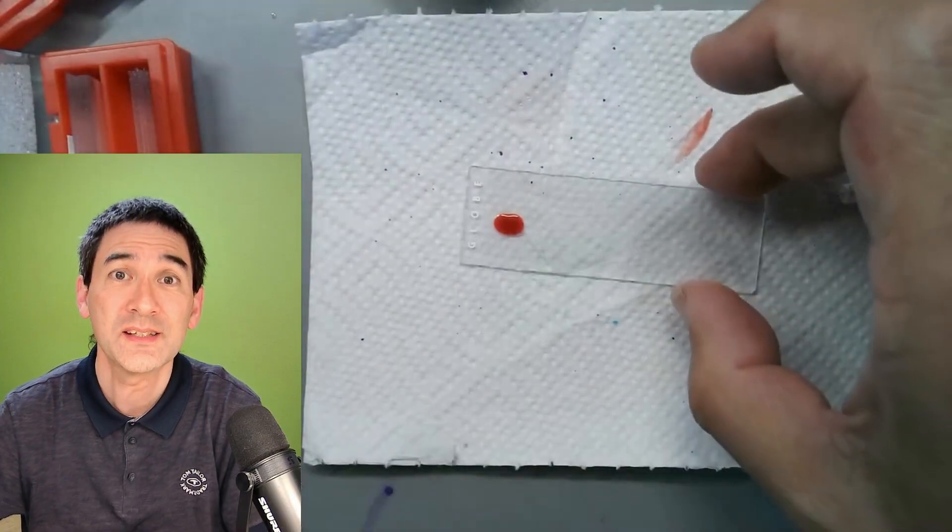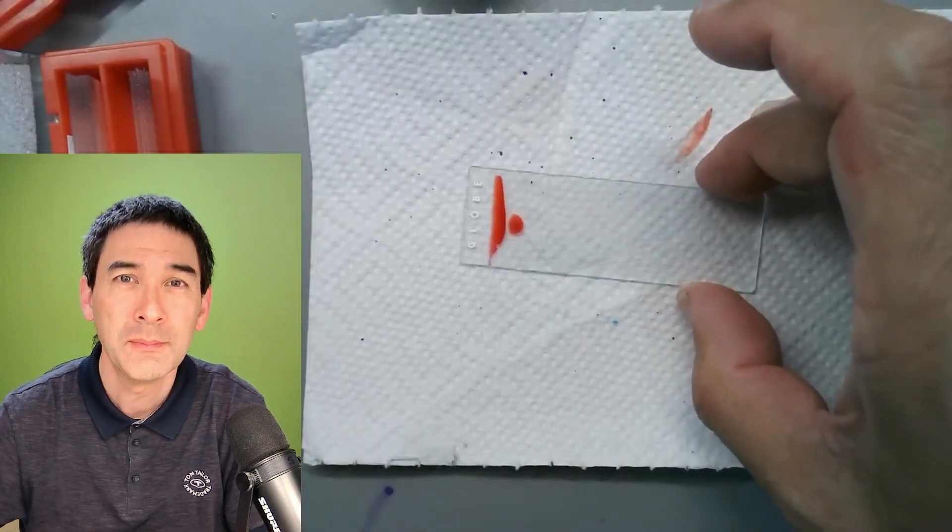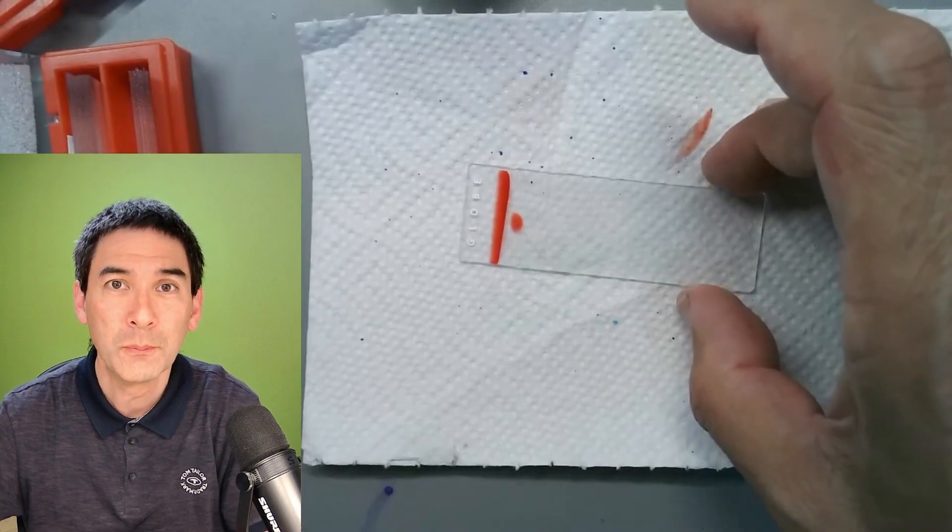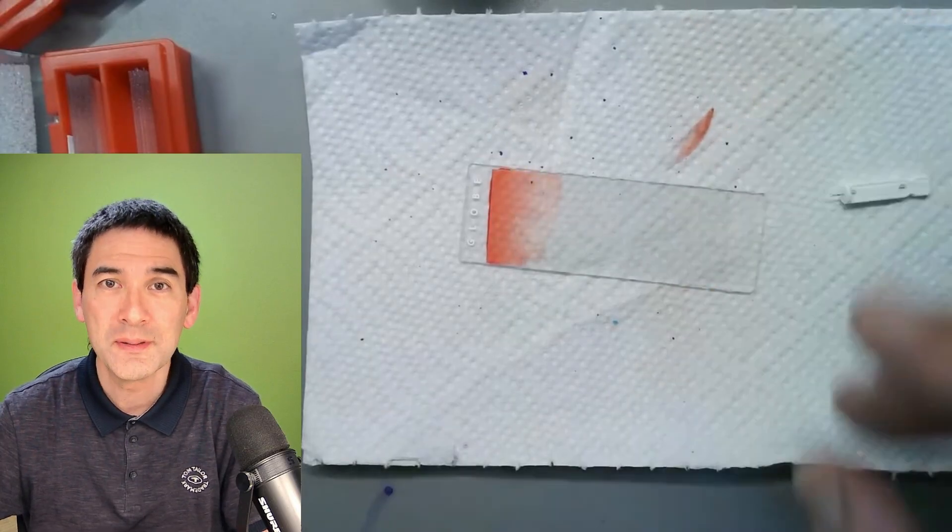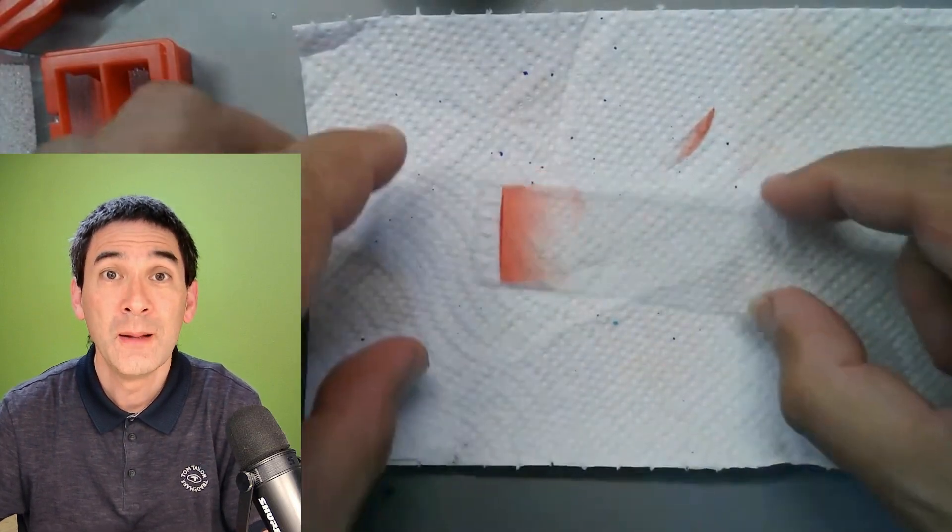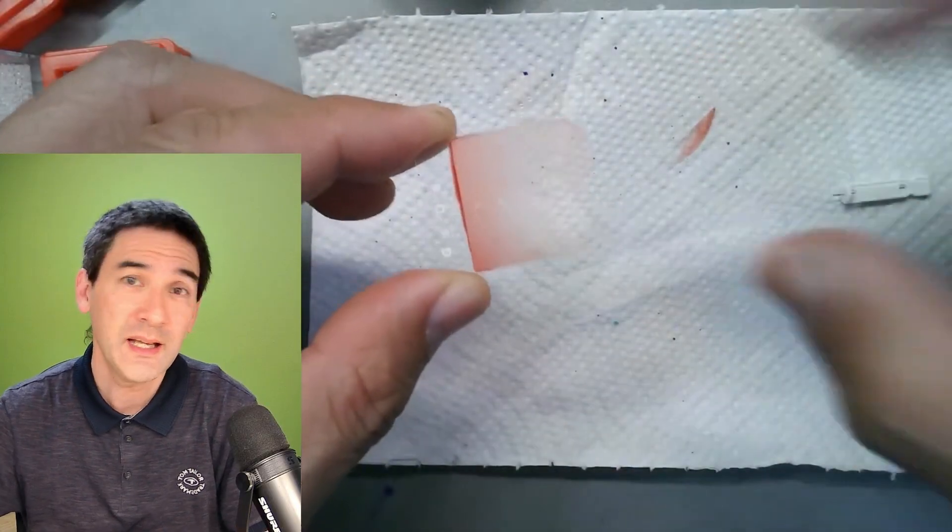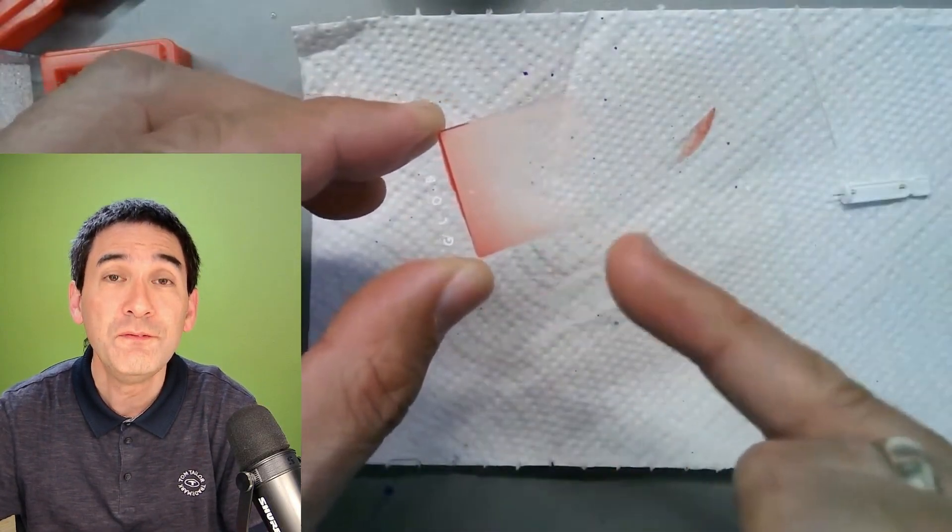Now of course you can use also the regularly sized cover glasses but then the amount of blood has to be of course much less. This one is a large one, covers almost completely the complete slide and look what happens now. Due to capillary action the blood now starts to spread beneath the cover glass and it also creates a very thin film.